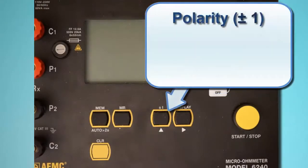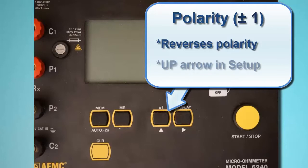The next button to the right is the Polarity button, labeled ±1. This reverses the polarity of the test current and displays the average of the two polarity measurements. This is useful for minimizing the effects of stray DC currents when measuring very low resistances. This button also serves as the up arrow in user configurable screens, such as those displayed in setup mode.